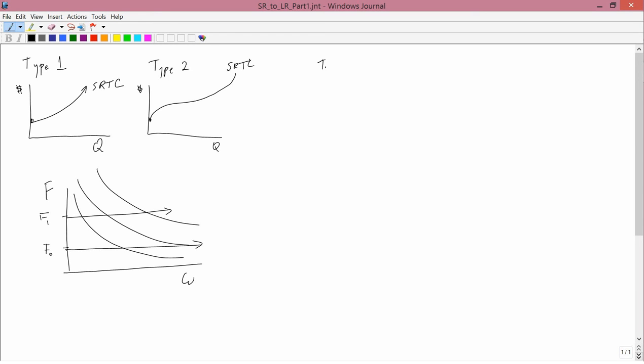Now, I don't need to specify whether I'm studying type 1 or type 2. I can do either one, and so I'll do both. And as we know, type 1 short run total cost curves look like this, and type 2 look like this.